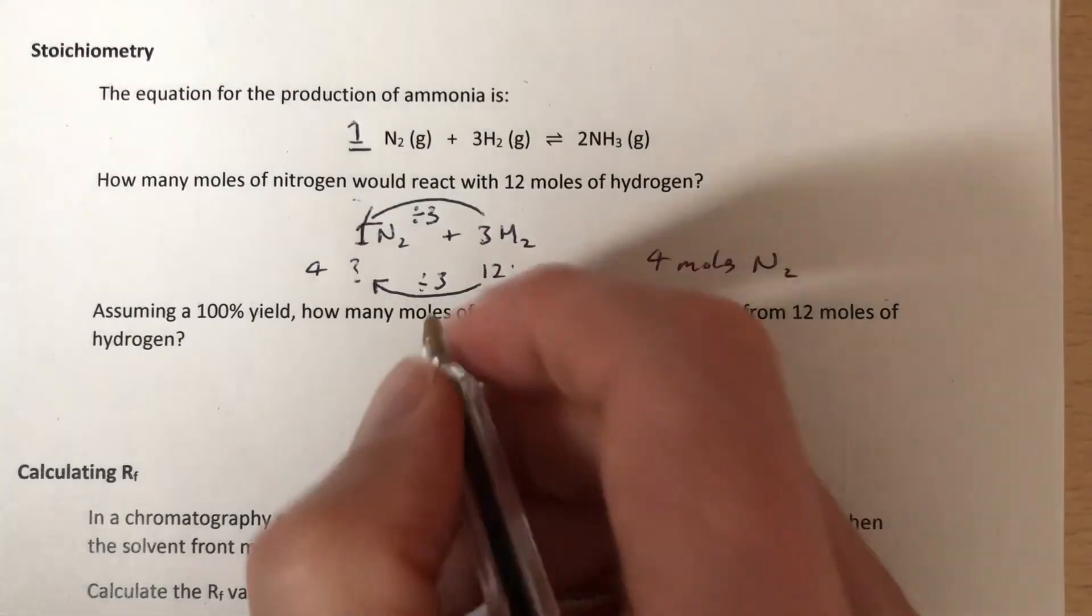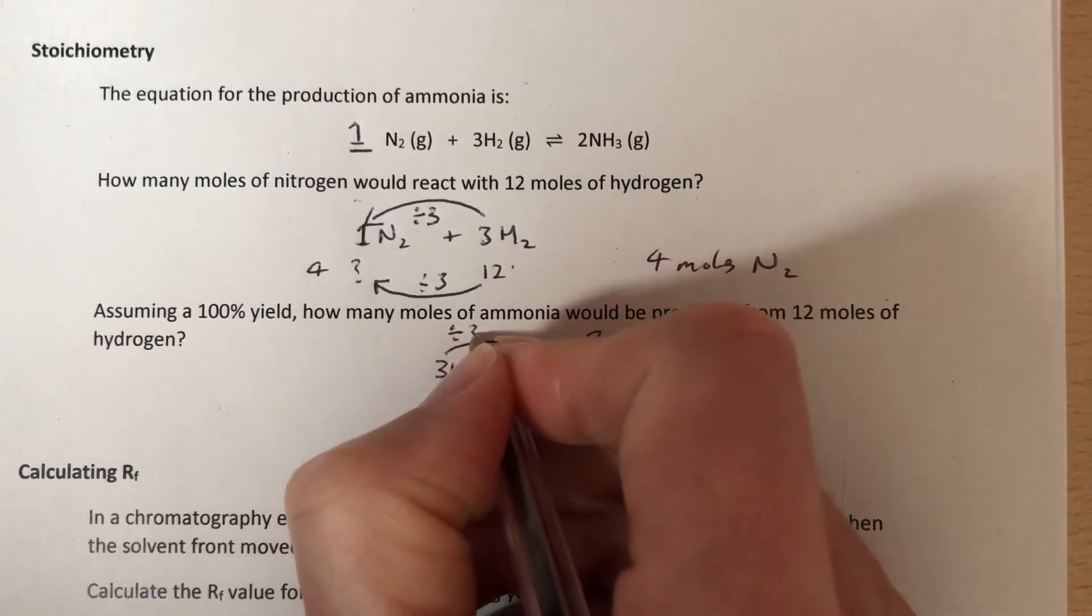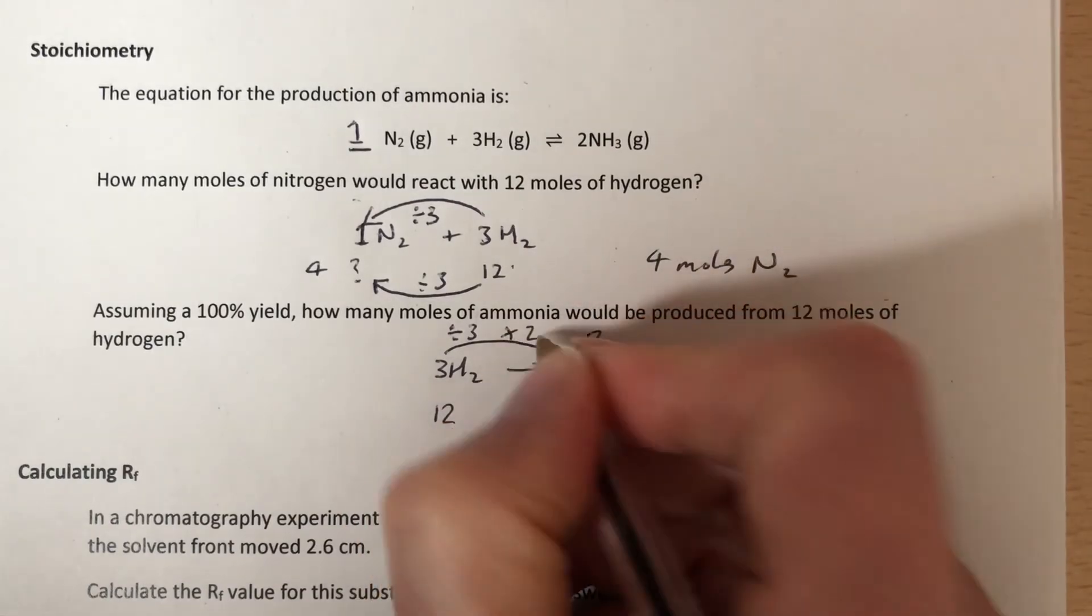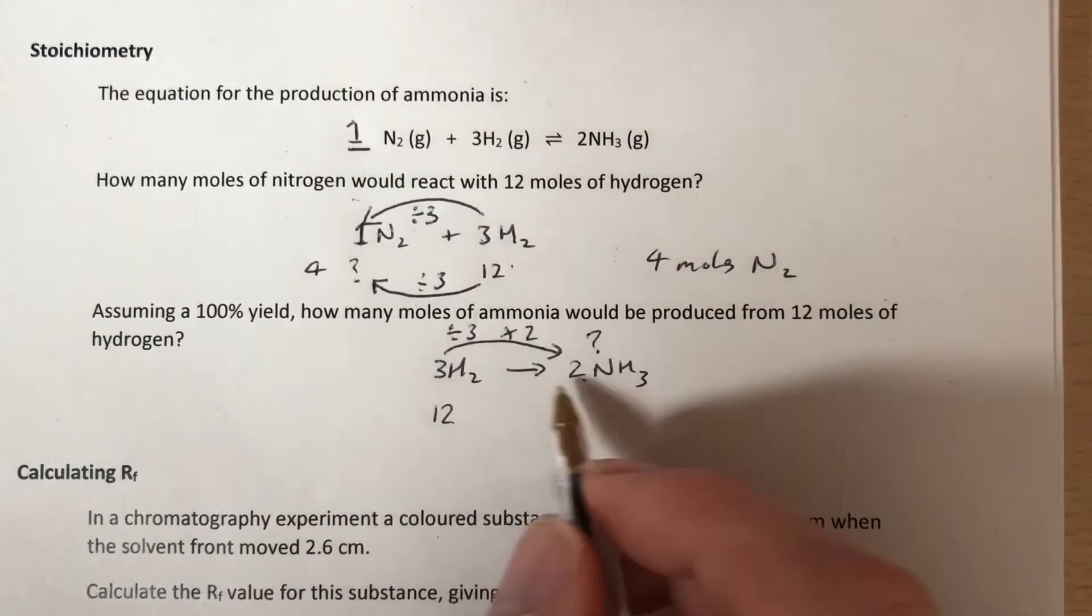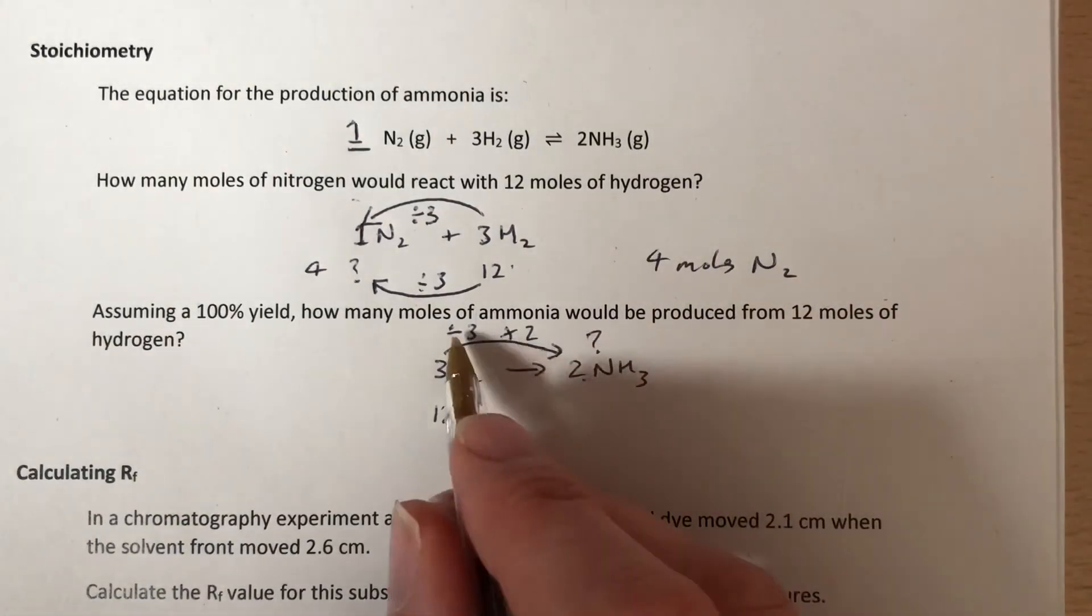Well easiest way I can think of to do that, to explain it, is to say well if we divide three by three we get one, and then we're going to multiply by two to get two. You could multiply by 0.67, that would do the job as well, but that possibly is the easiest way to understand.